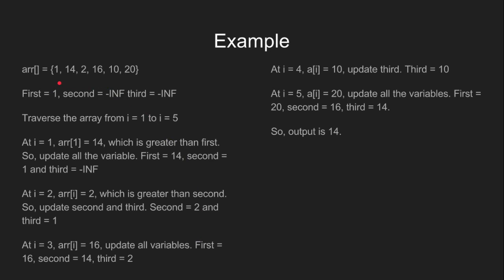Let's look at an example. We initialize 'first' as the zeroth element of the array, that is 1 in this case, and 'second' and 'third' as INT_MIN. We traverse the array from i equal to 1 to i equal to 5. At i equal to 1, we have 14, which is greater than 'first', so we update all the variables. At i equal to 2, we have 2, which is greater than 'second', so we update 'second' and 'third'. At i equal to 3, we have 16, which is greater than 'first', so we update all the variables.